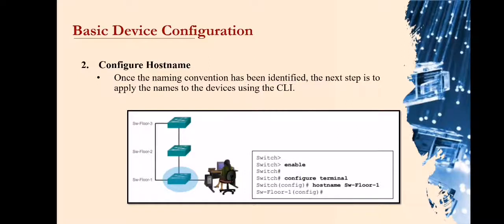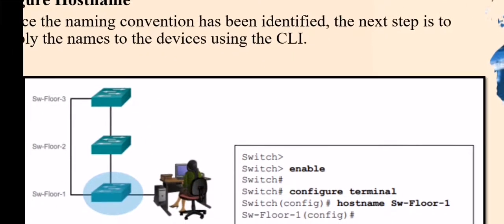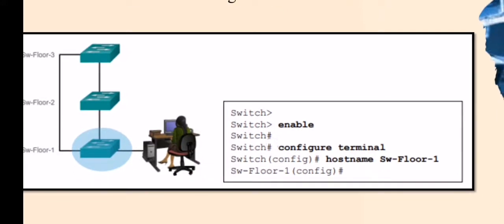The second step is to configure the host name. After configuring the switch, the next step is configuring the host name. Once the naming convention has been identified, the next step is to apply the names to the device using the CLI or command line interface. The hostname global configuration command is used to assign a name. An example of how configuring a host name is done is shown here.